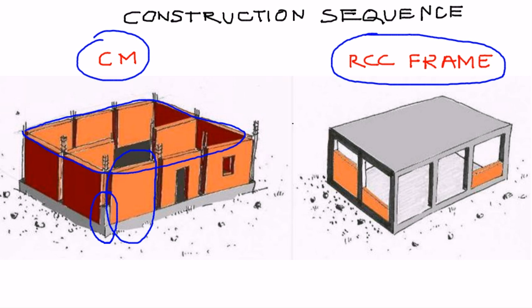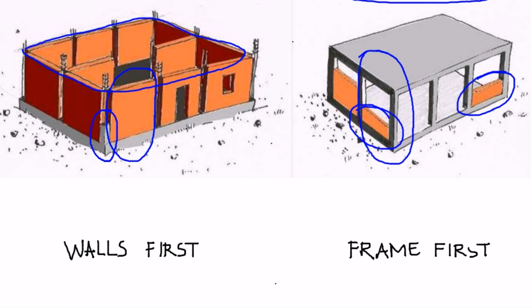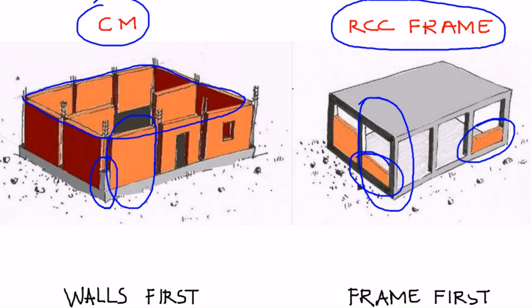On the other hand, for reinforced concrete frame construction, frames along with floors and roofs are being built first for the entire building. And masonry infill walls are being constructed at the very end, as it can be seen here. So that is a major difference in the construction sequence and it has implications on the differences in behavior of these two technologies. To summarize, confined masonry construction can be defined as walls first construction, whereas reinforced concrete frame construction with masonry infills could be described as frames first construction.